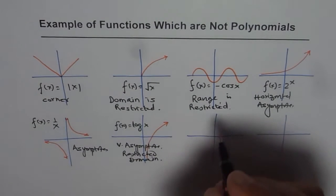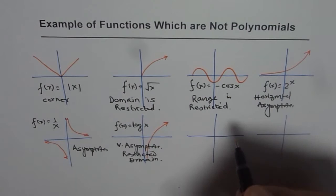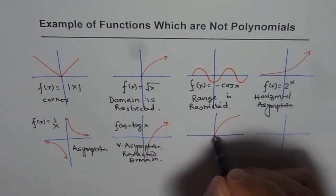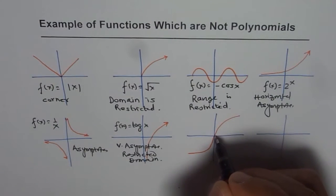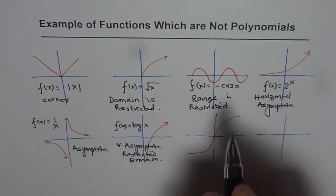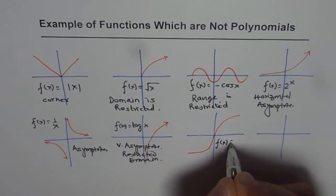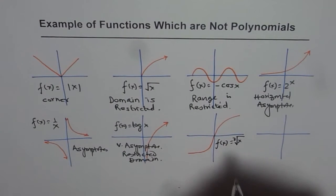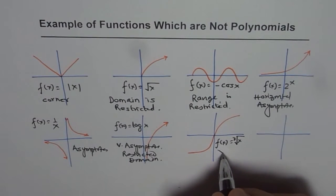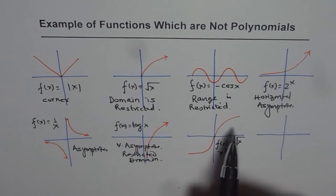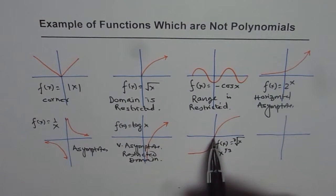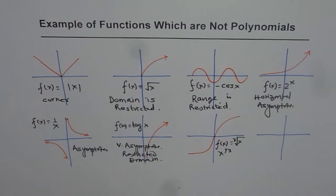Next, consider the cube root function: f(x) = ∛x, which equals x to the power of 1/3. It is not a polynomial since the degree is not a whole number. It looks like a cubic function, but it is not really a cubic function.